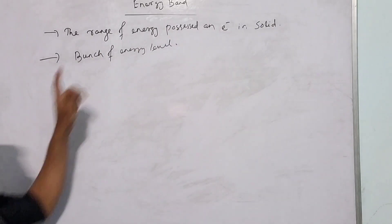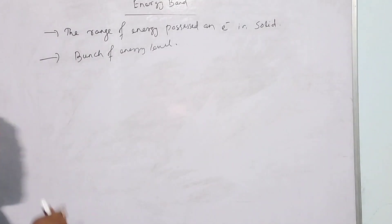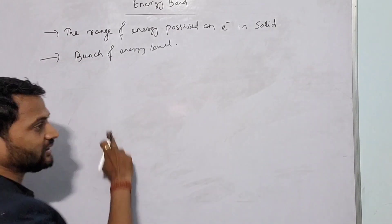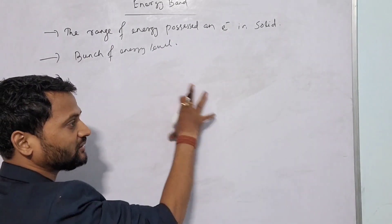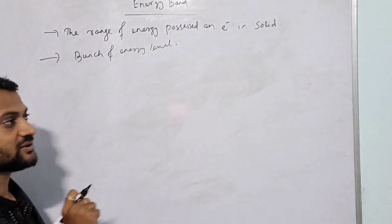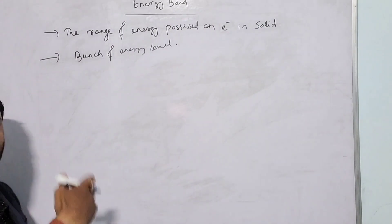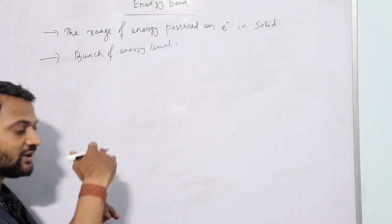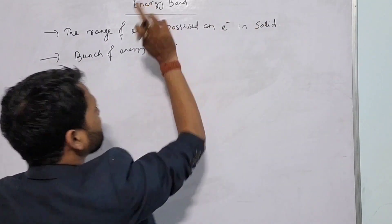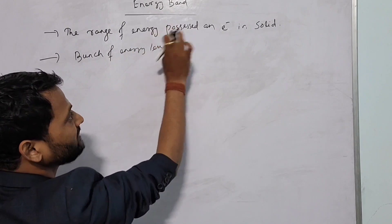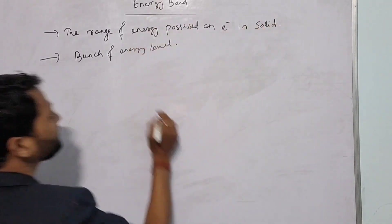Can we get an energy band in an isolated atom or a single atom? The answer is no. According to Bohr's theory, an electron revolves around the nucleus in different orbits, and the electron will have a definite amount of energy for a particular orbit. So the nature of energy level is discrete. But in a solid or crystal or compound, there will be overlapping of orbits, which gives us a range of energy levels — a bunch of energy levels — and that is called the energy band.